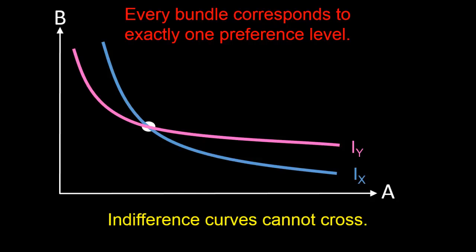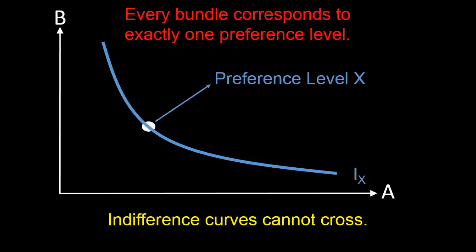Let's consider this bundle. What preference level does this bundle correspond to? Well, since it's on the blue indifference curve, it has a preference level of x.